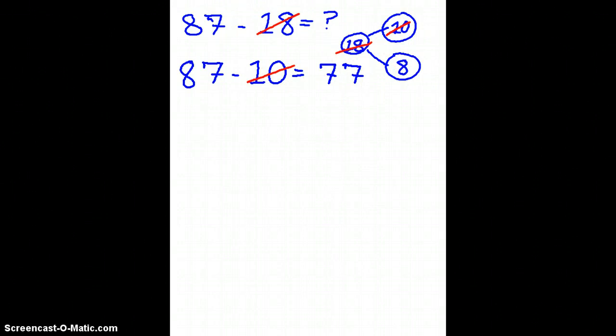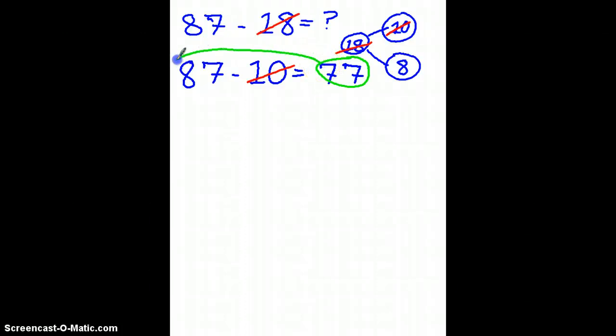My last step then, and I'll do that in a different color, is to take the difference I just got from subtracting 10, and I'm going to bring it around. Because really I'm subtracting 18, I need to also subtract the 8 from my number bond, that other part, because I only took away one part.